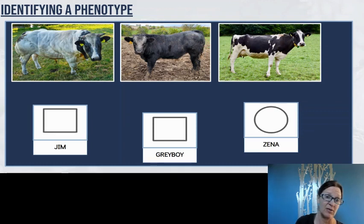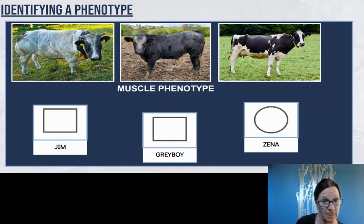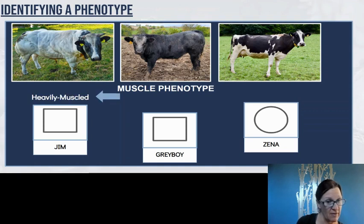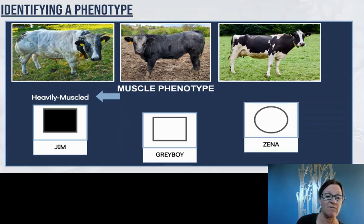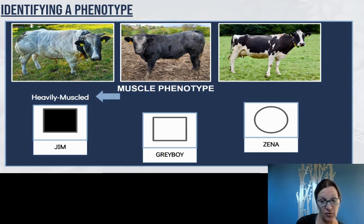The second phenotype we're going to focus on is the phenotype of muscle type. There are three different muscle phenotypes. The first one is heavily muscled — Jim, up in the upper left-hand corner, has the heavily muscled phenotype. He's a male, so we've given him a square, and we're going to represent that heavily muscled male by filling that square in black. Any heavily muscled individual will have their square or circle colored in black.